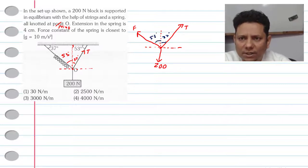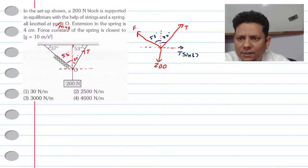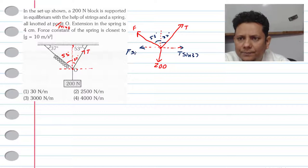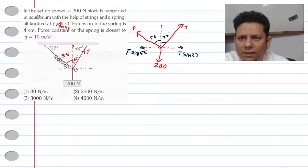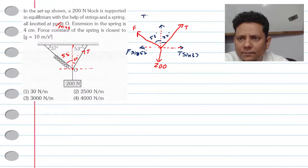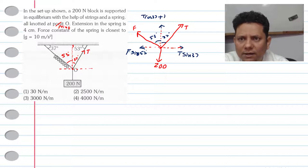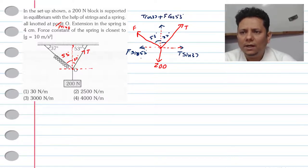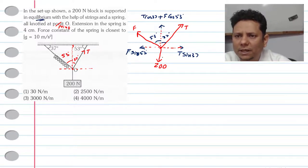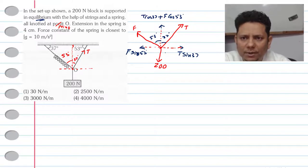Now if we draw the components of tension and spring force in horizontal and vertical directions: the T component in this direction is T sin 37°, and the spring force component FSP in this direction is F sin 53°. Tension and spring force also have components T cos 37° and F cos 53°.